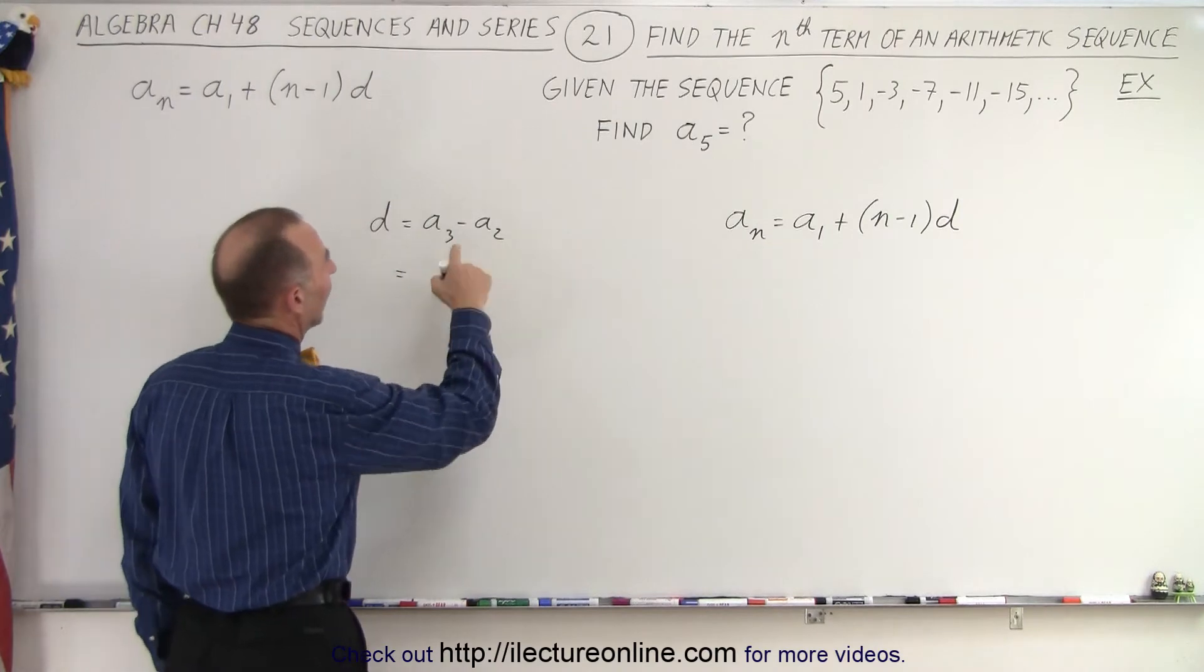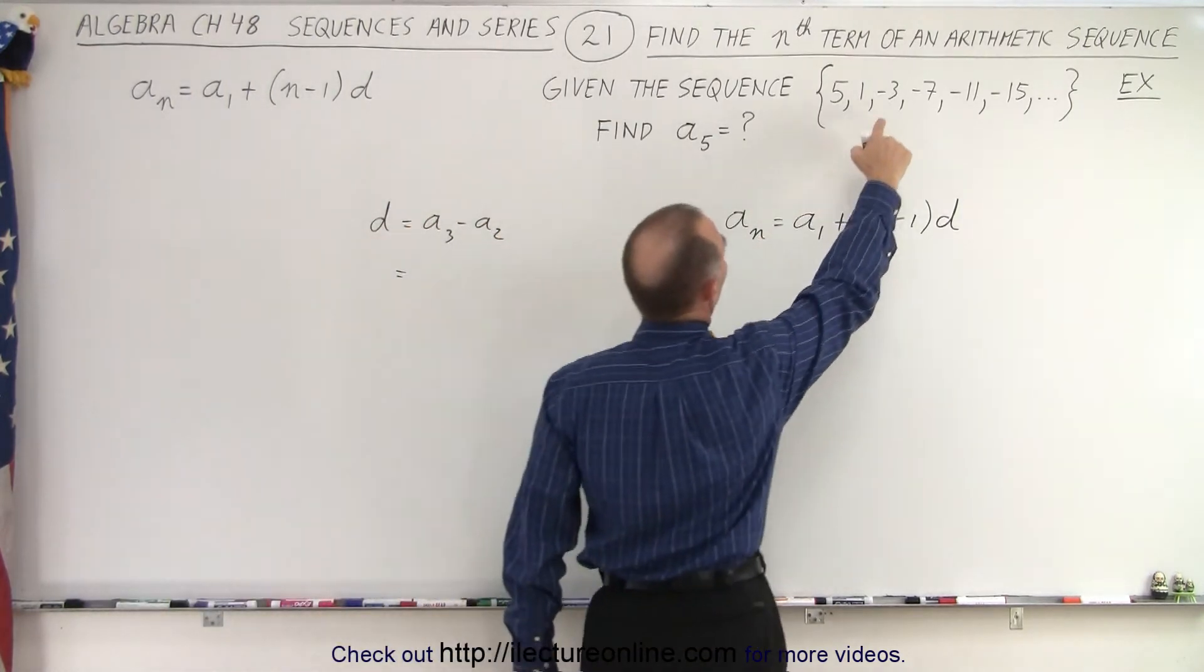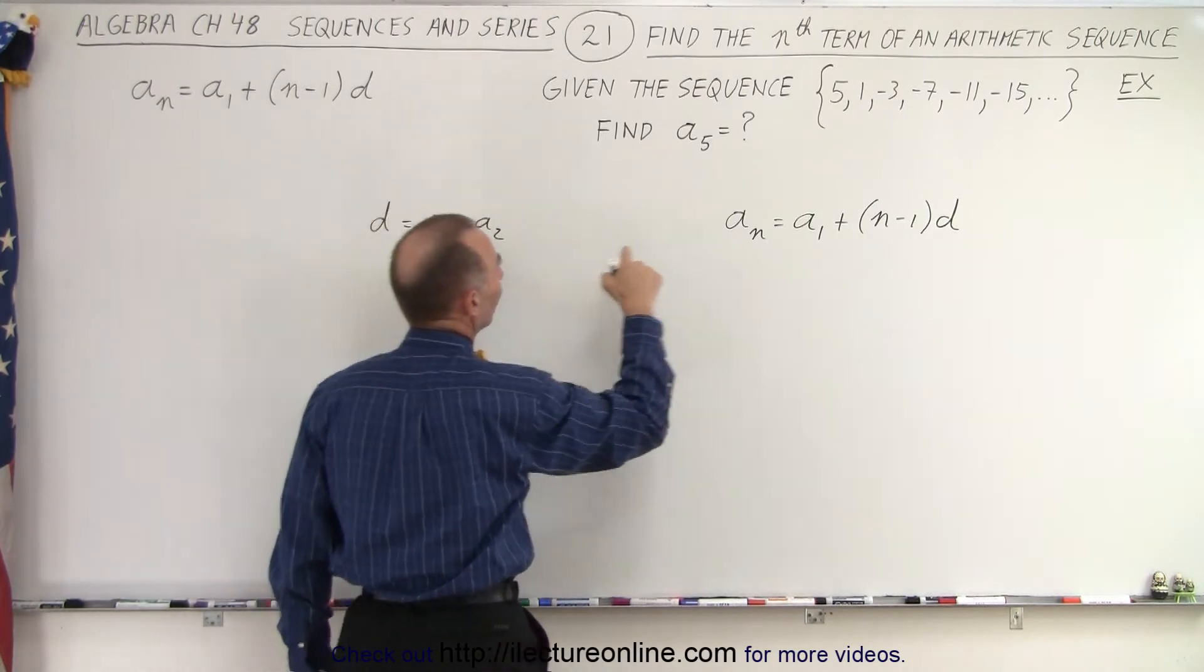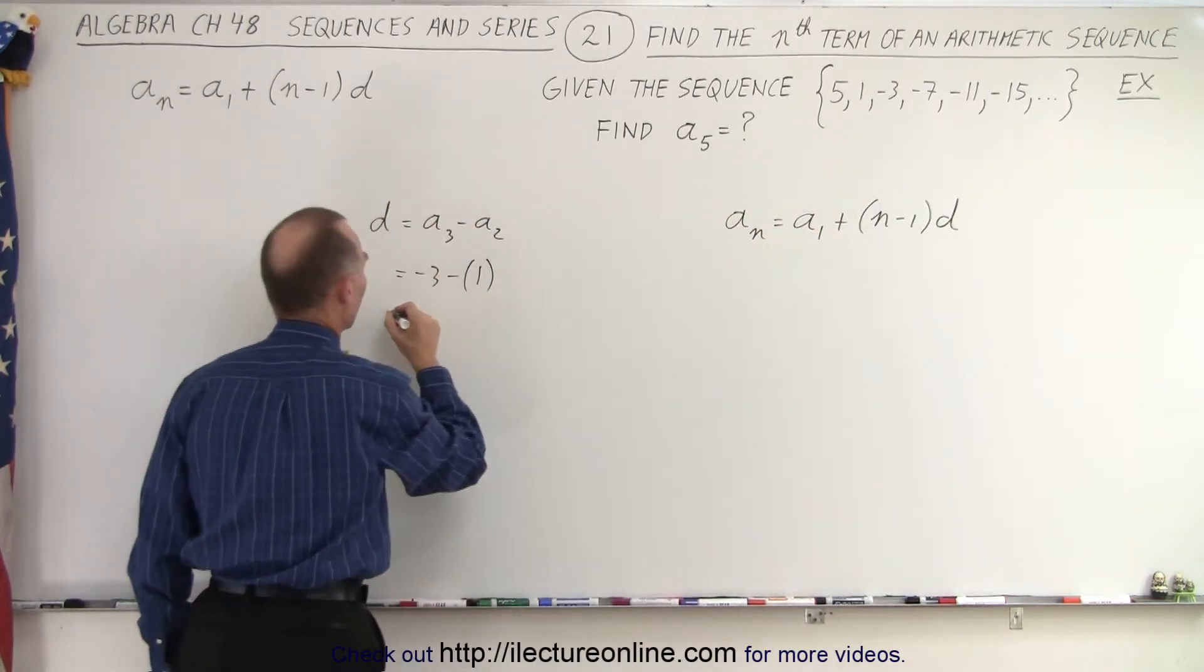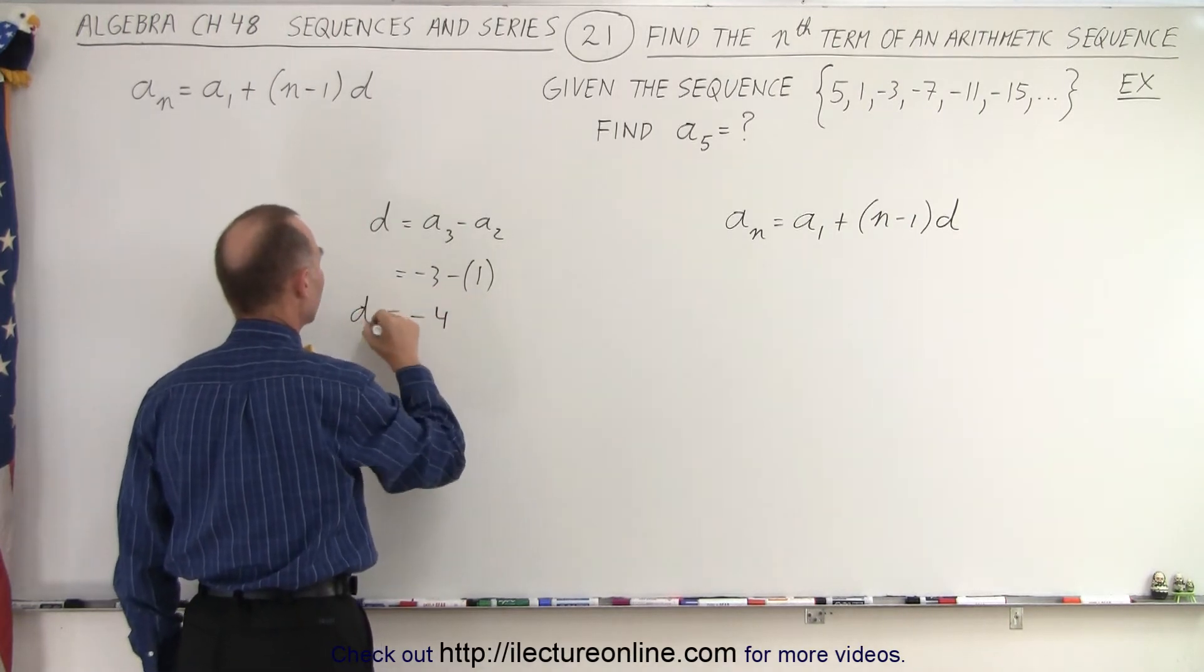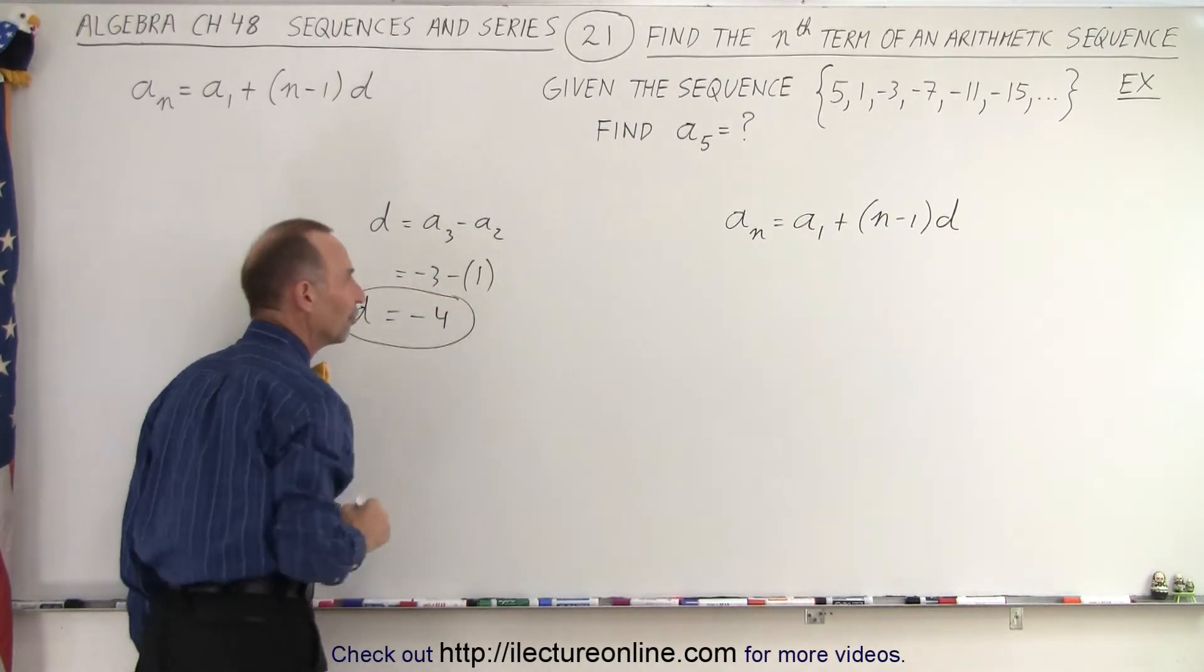So in this case a3 is the third term, so that's minus 3. And we're going to subtract from that the second term which is equal to 1. So that means that minus 3 minus 1 is equal to minus 4. So the common difference is equal to minus 4.